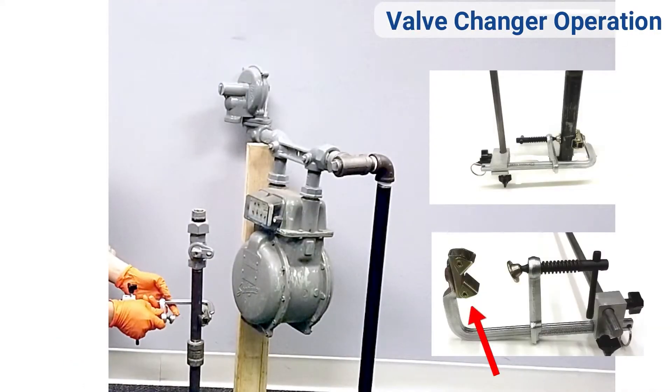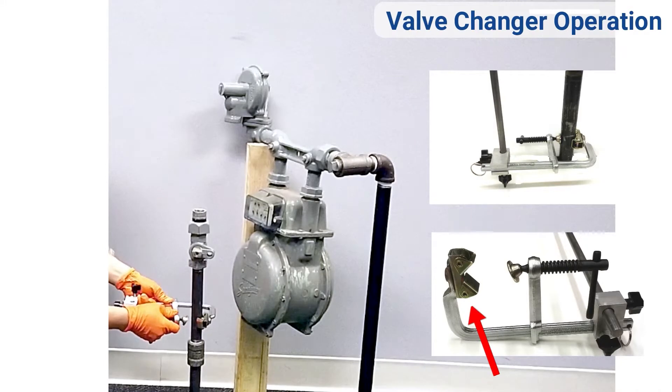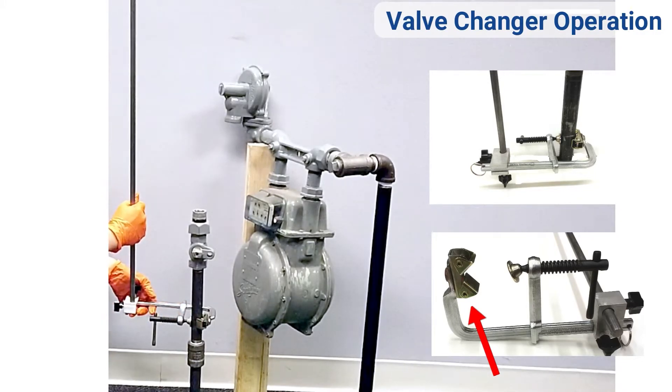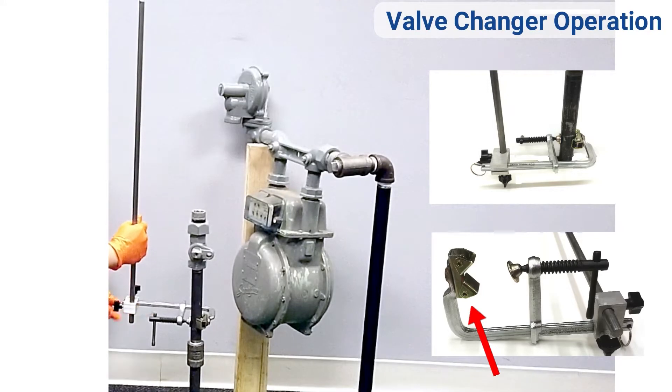Fasten the bottom jaw of the three-point safety clamp onto the riser below the valve. Fit the clamp shaft through the hole and tighten the knob.